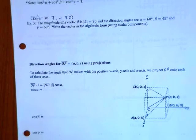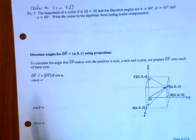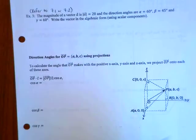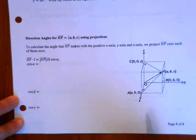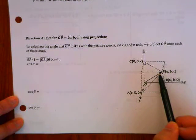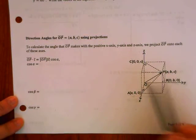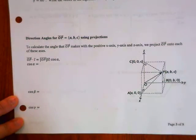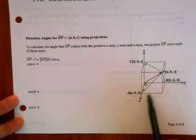So then let's go on to this one. This part should be the same in your notes. Direction angles for OP using projections. To calculate the angle that the vector OP makes with the X, Y, and Z axes, we project OP onto each of the axes.